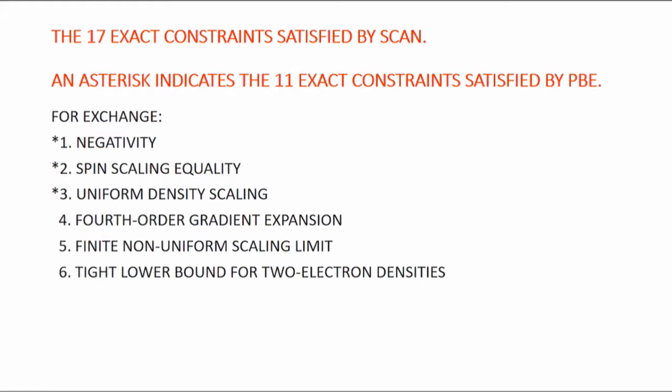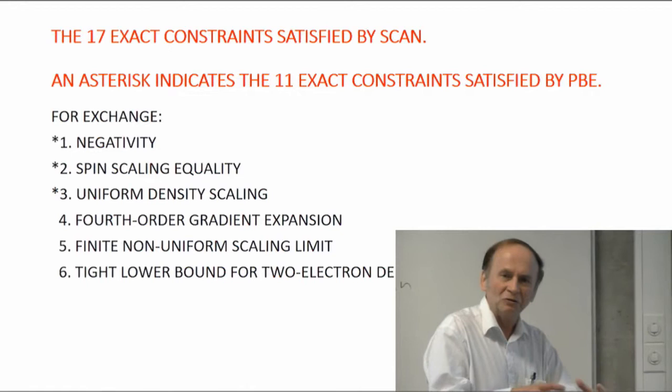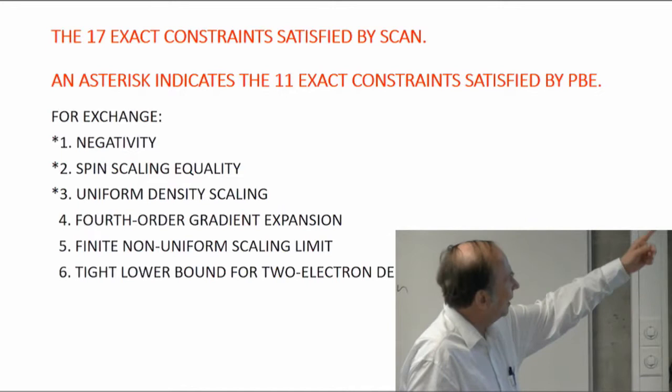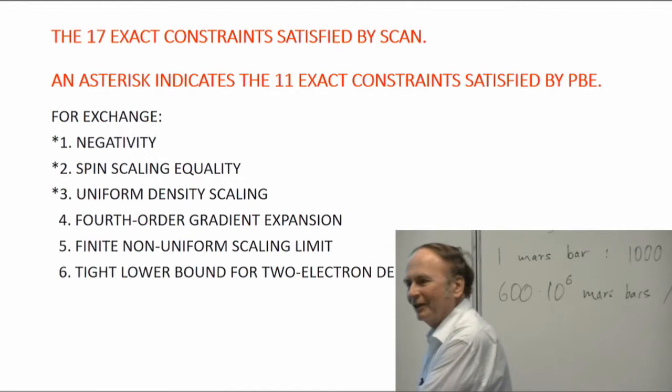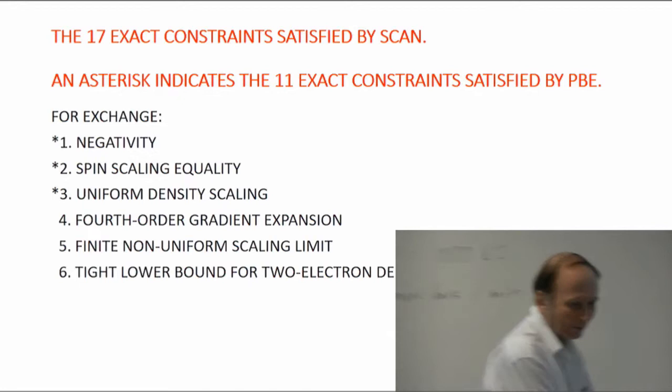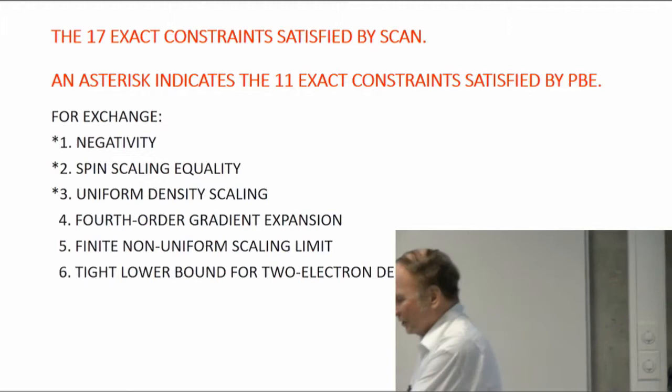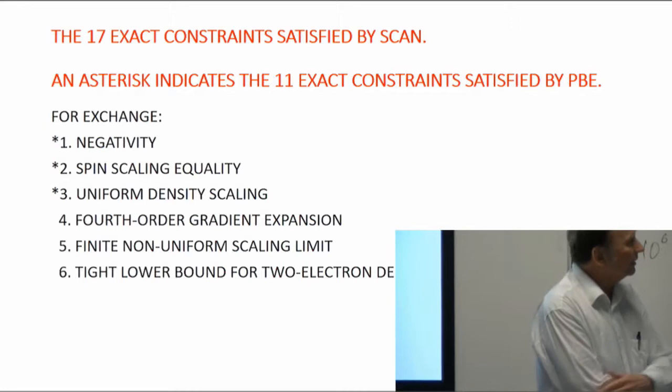What are the 17 exact constraints satisfied by the SCAN functional? I'll list them: first for the exchange energy alone, then for the correlation energy alone, and then for the two combined into one object, E_XC. I'll put an asterisk in front of the ones also satisfied by PBE — 11 of the 17 were also satisfied by the Perdew-Burke-Ernzerhof generalized gradient approximation. Some of these constraints are very simple and trivial; others require very sophisticated proof.